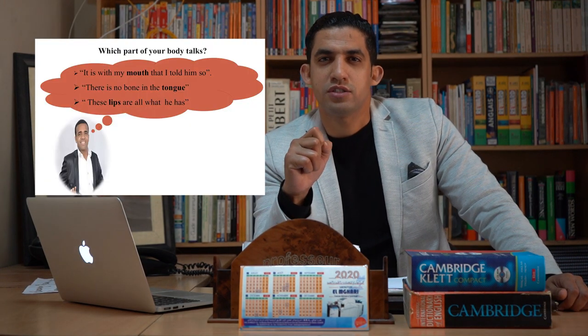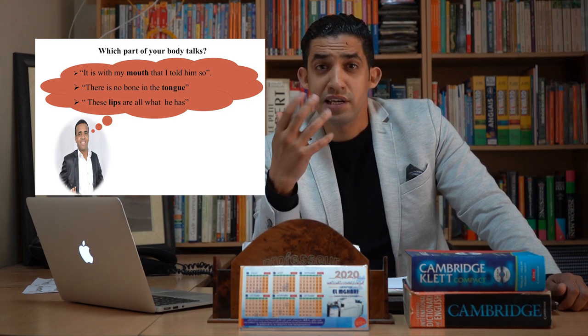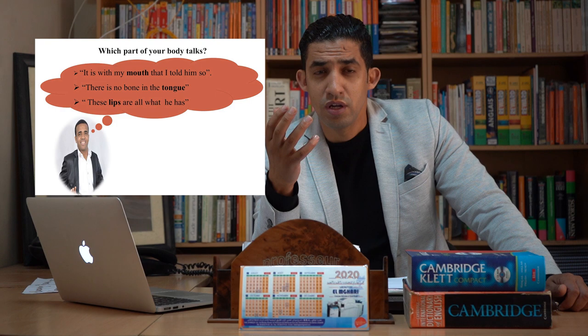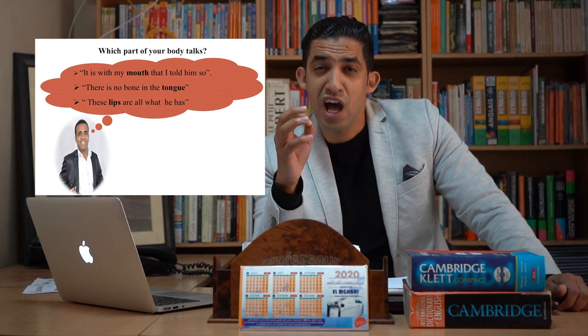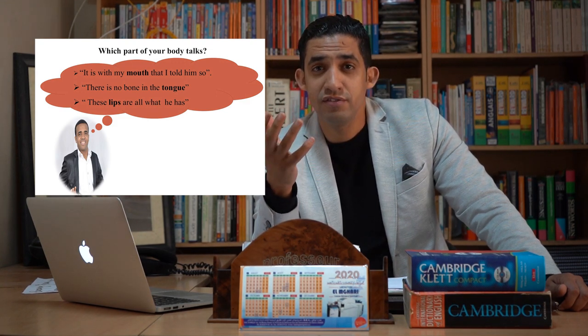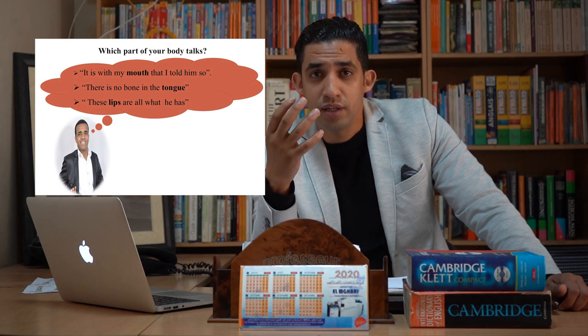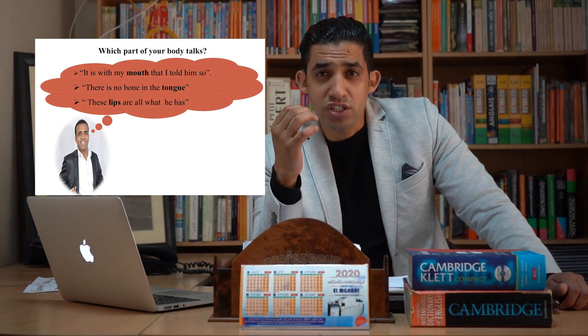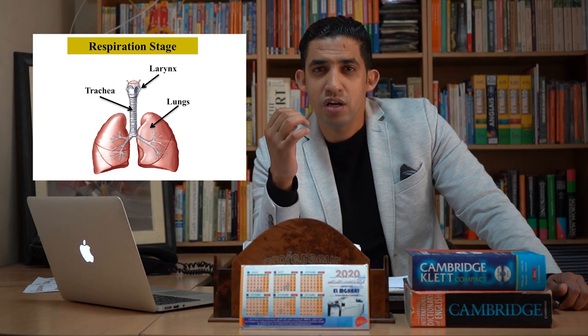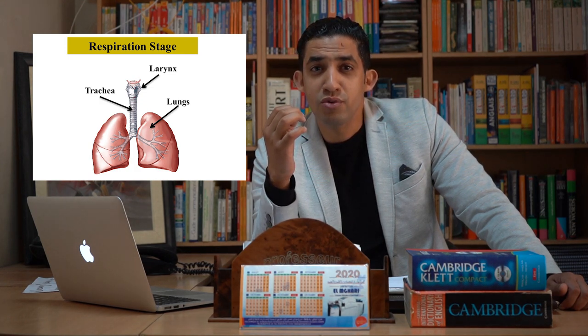Which part of your body talks? The production of sounds involves different organs such as the mouth, tongue, and lips. However, phoneticians prefer to go deeper in understanding how sounds are produced. They believe these organs are crucial, but that most speech sounds are produced through three main stages.